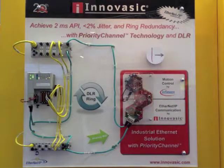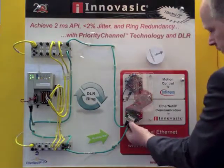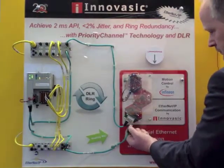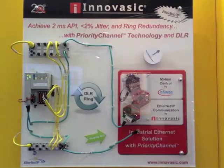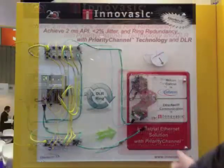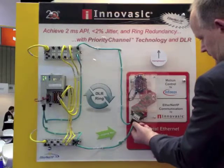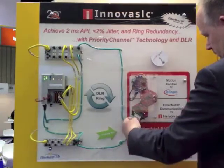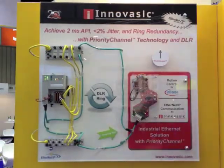DLR is a ring redundancy protocol that allows a ring to be broken, as shown here. It immediately turns into a line topology and continues operating. You can restore the ring at any time and break it again.